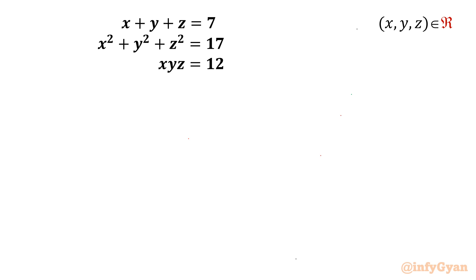Here we have x plus y plus z equal to 7, x square plus y square plus z square equal to 17, xyz equal to 12. We have to find out all ordered pairs x, y, z belongs to real numbers.